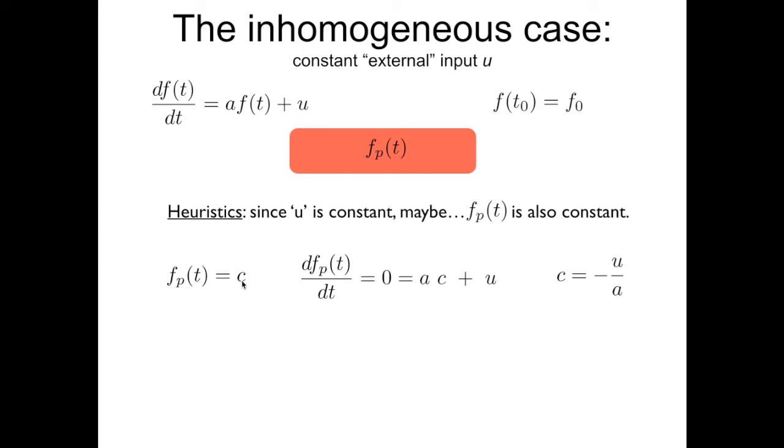So I get one algebraic equation, and I can solve it for c. So I can write c equals minus u divided by a. If this is the constant we are talking about, then yes, this is going to satisfy this non-homogeneous ordinary differential equation.